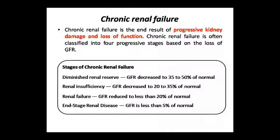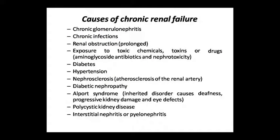Chronic renal failure is the end stage of renal disease, characterized by progressive kidney damage. In the end stage of renal failure, GFR falls to less than 20-35%, and in advanced cases only about 5% of normal function remains.